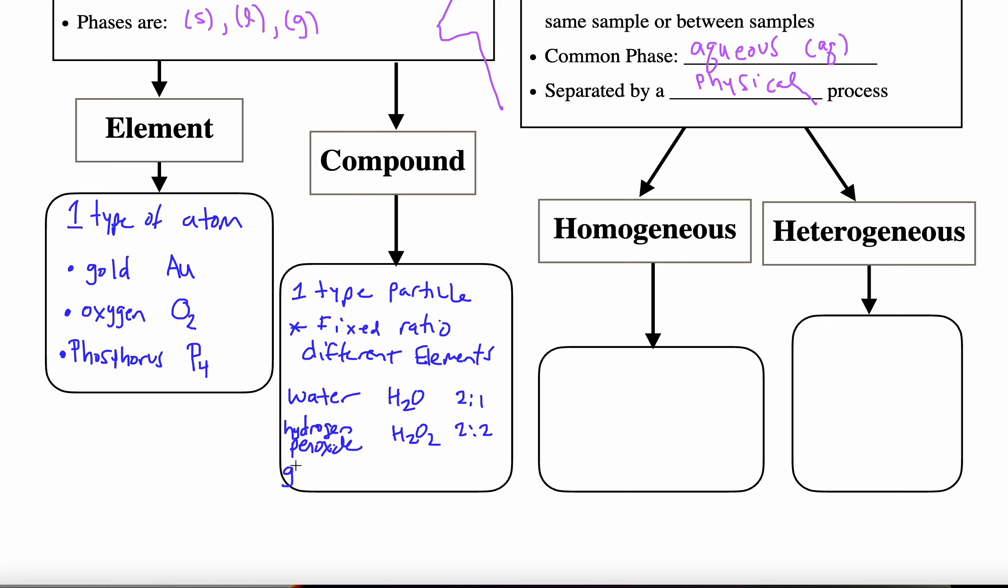One more example. So if I put the term glucose, and most of you know that term, the chemical formula C6H12O6, this one has three different elements, carbon, hydrogen, oxygen. And we have a fixed ratio of one-to-two-to-one. So a compound is one type of particle. It maintains a fixed ratio of different elements.